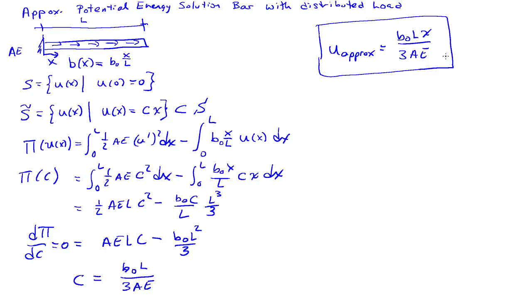Now, this problem, we have a distributed load that's linearly varying, so if I were to look at the exact solution, so if I looked at AE u double prime plus B0 x over L, so using the differential equation of equilibrium, we can see that U is really going to be cubic in nature. But what we have up here is a linear approximation solution to the true cubic solution.